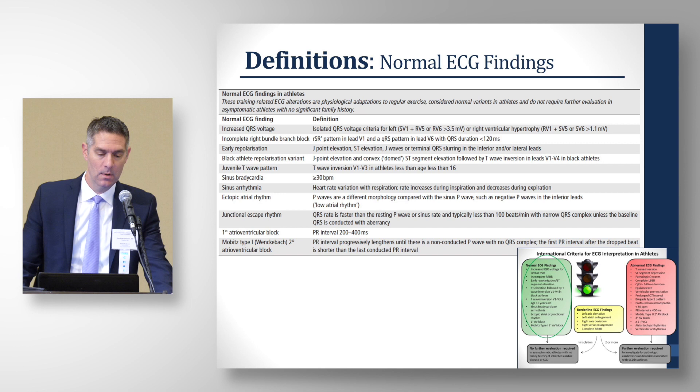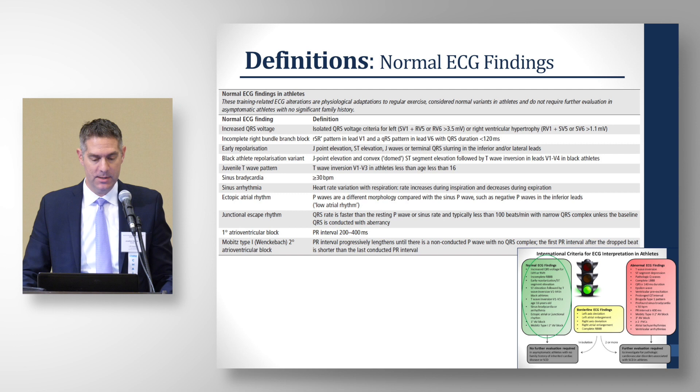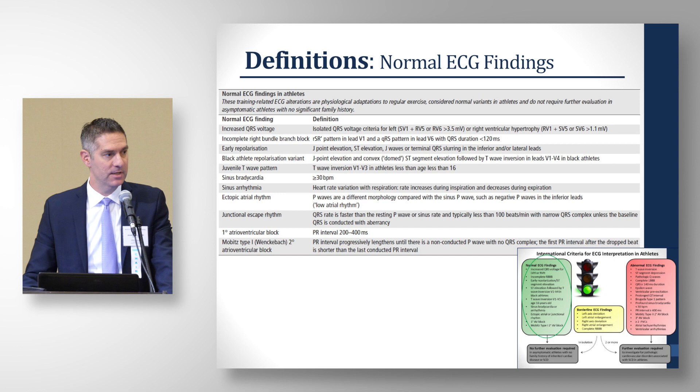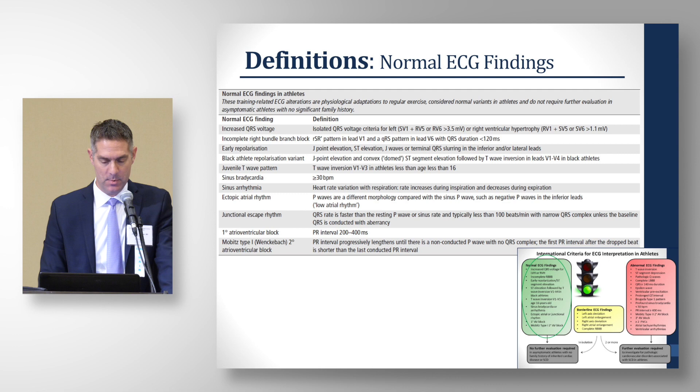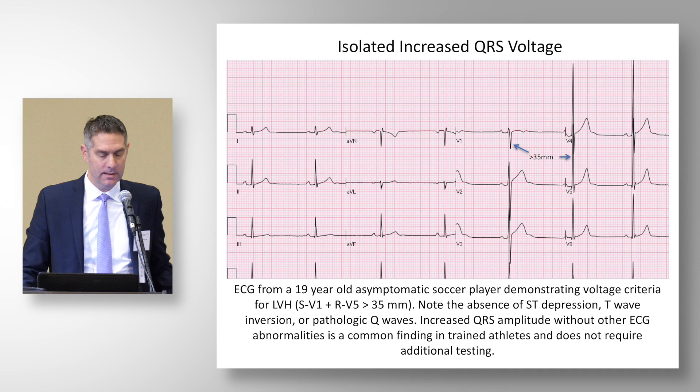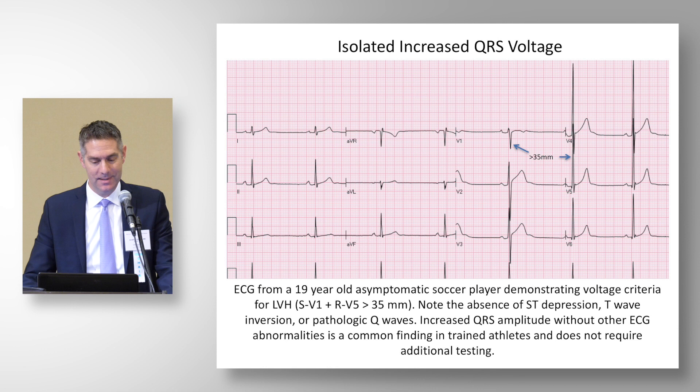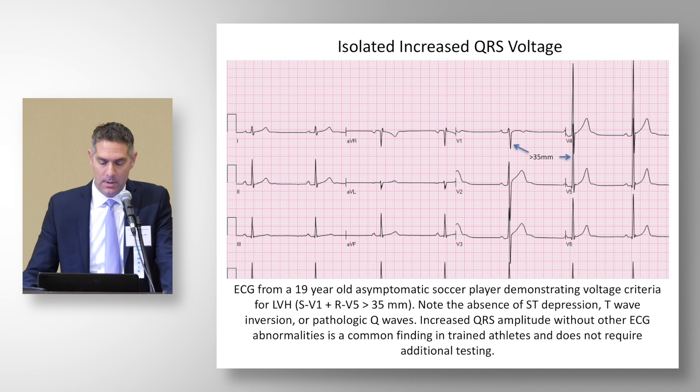Table 1 in the international criteria documents is really important — it provides the definitions so you understand exactly what you're looking for. Joe Merrick will talk in greater detail on isolated increases in QRS voltage. This is a normal appearing ECG, but you can see the striking QRS amplitude — well over the 35 millimeter cutoff for Sokolow offline criteria — yet this is a normal looking ECG.